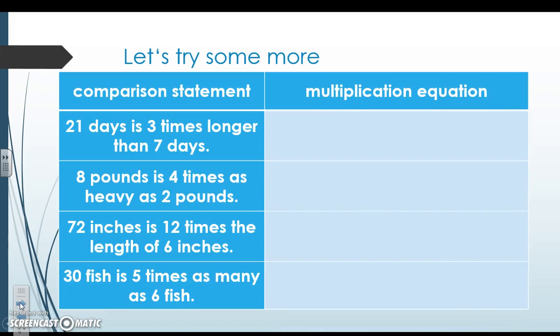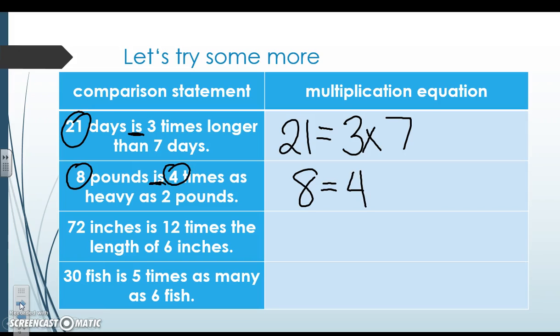Let's try another one. So here we're given a comparison statement and we just need to write multiplication. So 21 is telling me to put an equal sign. Three times longer than seven days. Eight pounds is equal sign four times as heavy as two pounds. Right? Eight equals four times two.